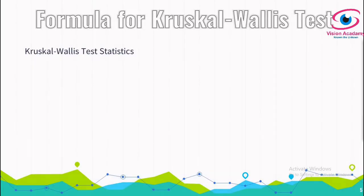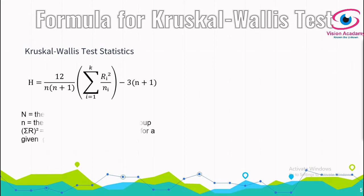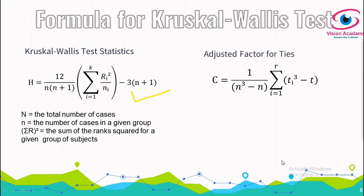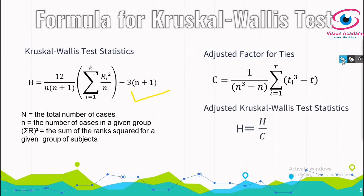Let us look at the formula used for this problem. This formula is used when there are no ties between the samples. If there are ties, we need an additional adjusted factor C, which can be calculated using another formula, and then compute the adjusted Kruskal-Wallis test — I will cover that in my next video. Since there are no ties in the selected problem in this video, we will solve using the standard formula.